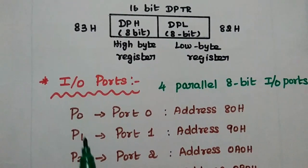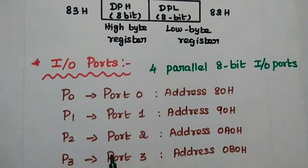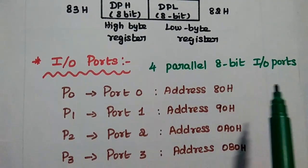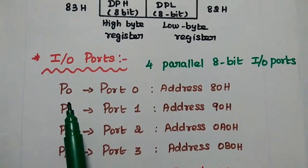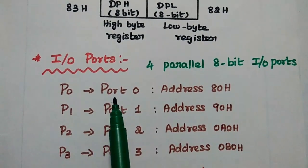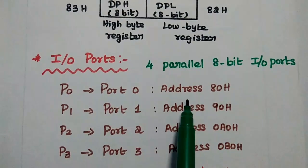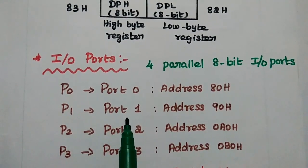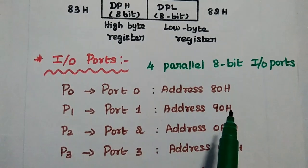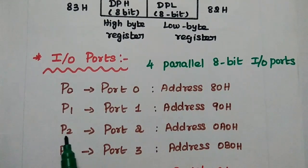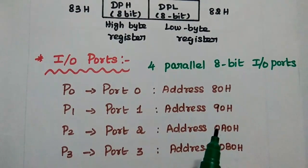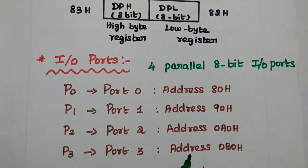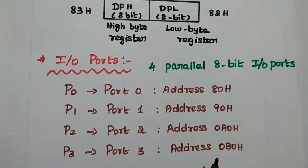The next SFR is input-output ports. AT51 has 4 parallel 8-bit input-output ports: P0 (port 0) at address 80H, P1 (port 1) at address 90H, P2 (port 2) at address 0A0H, and P3 (port 3) at address 0B0H.